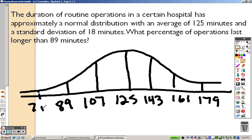So, what's the percentage of operations that last longer? So, longer than 89, so which direction do you think that means? Well, if this is 89, longer than 89 would be anything higher, so I'm looking for everything in this direction. So, from here up.